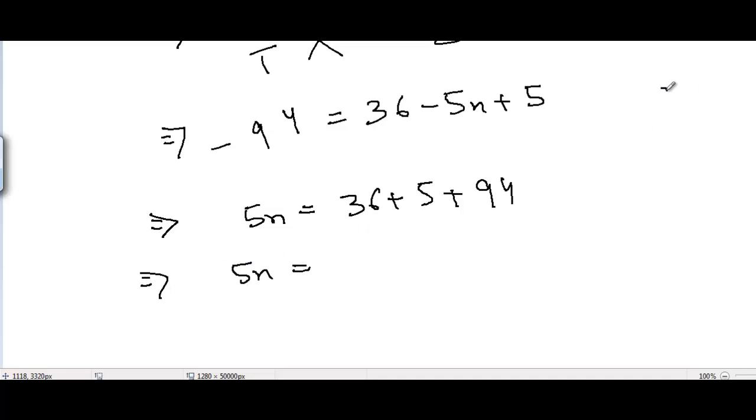And I get 5n equals - now 36 + 5 + 94. 6 + 4 is 10, 10 + 5 is 15, 9 + 1 is 10, 10 + 3 is 13, it's 135 here. So I get n = 135/5 and it's equal to 27.